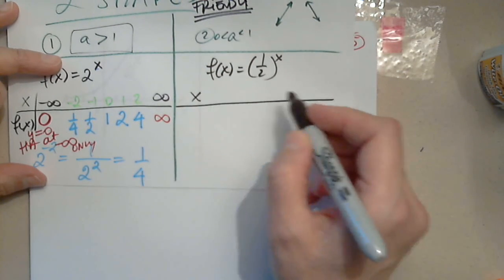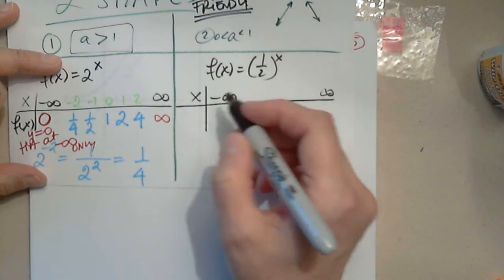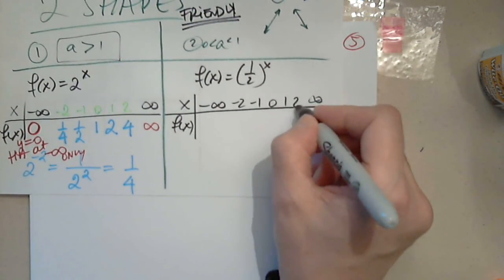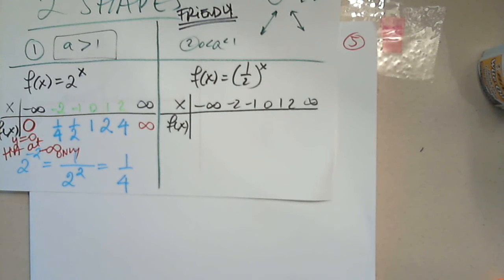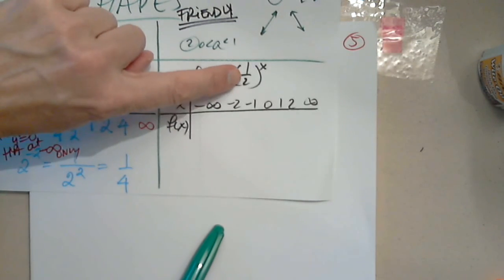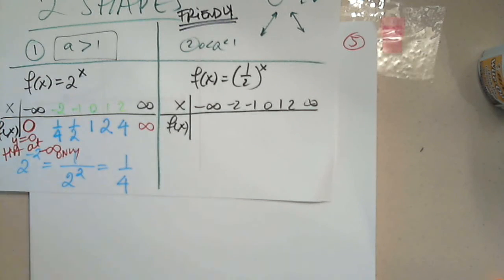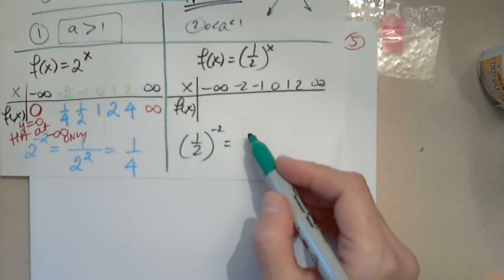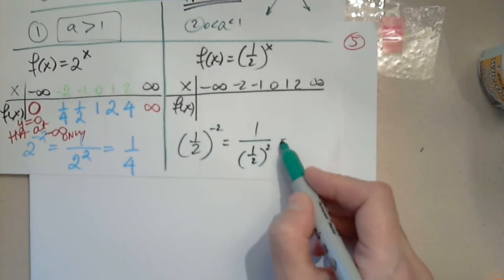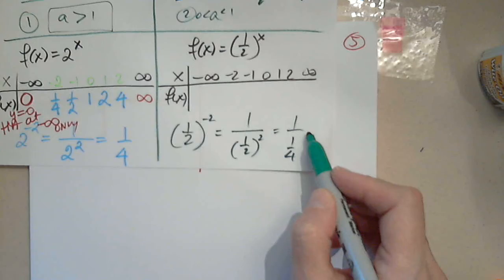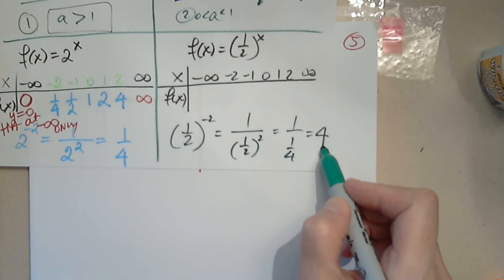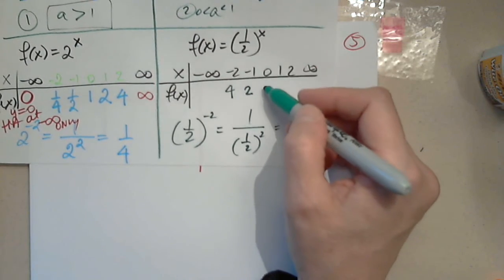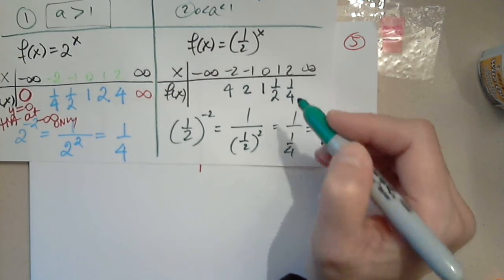It doesn't give me any headache. I'm going to use the same x values: negative 2, negative 1, 0, 1, and 2. Plugging in carefully — (1/2)^(−2) = 1 over (1/2)^2 = 1 over (1/4) = 4. So this is 4, then 2, then still 1, but now 1/2, and 1/4.